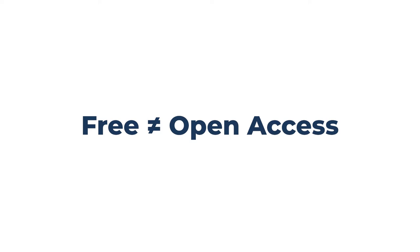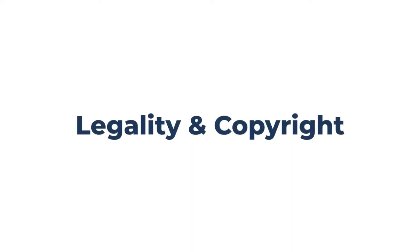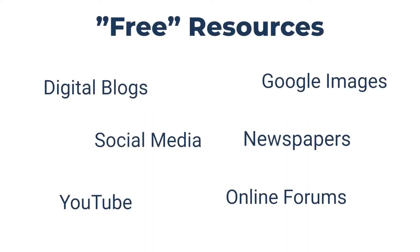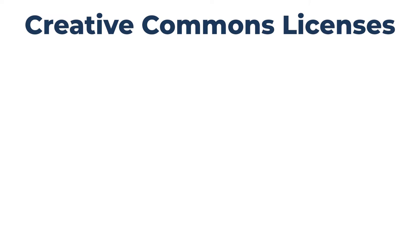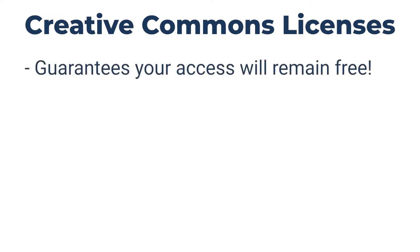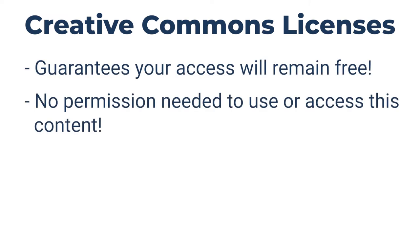Before we continue, it is important to point out that free and open access don't necessarily mean the same thing. The main difference comes down to legality and copyright. There are plenty of free resources on the internet, but use of that content is still limited by copyright. You don't have the same right to use and share free content, and there's no guarantee that your access will stay free. Open access, however, is published under a Creative Commons license, which guarantees that it will always be free and requires no permission if you need to use or access the content.